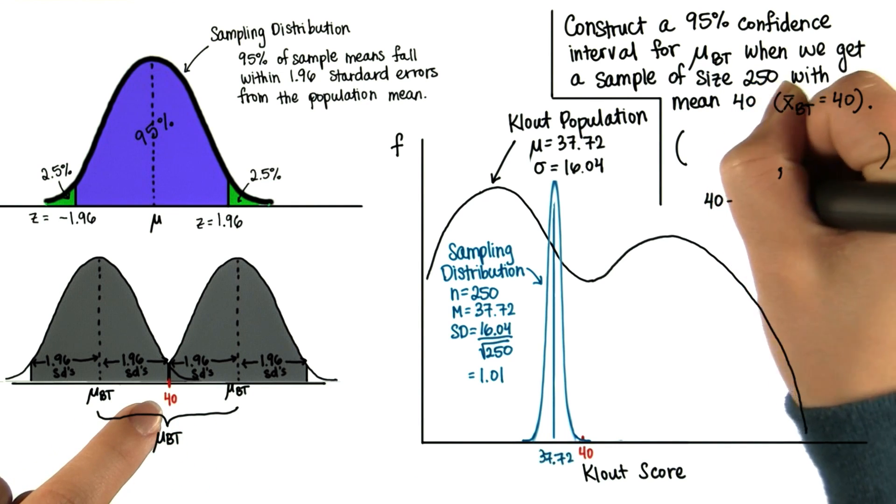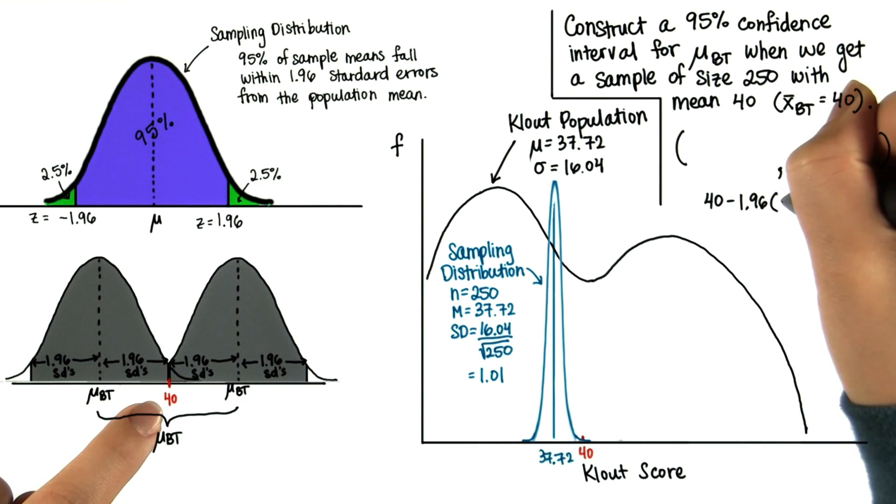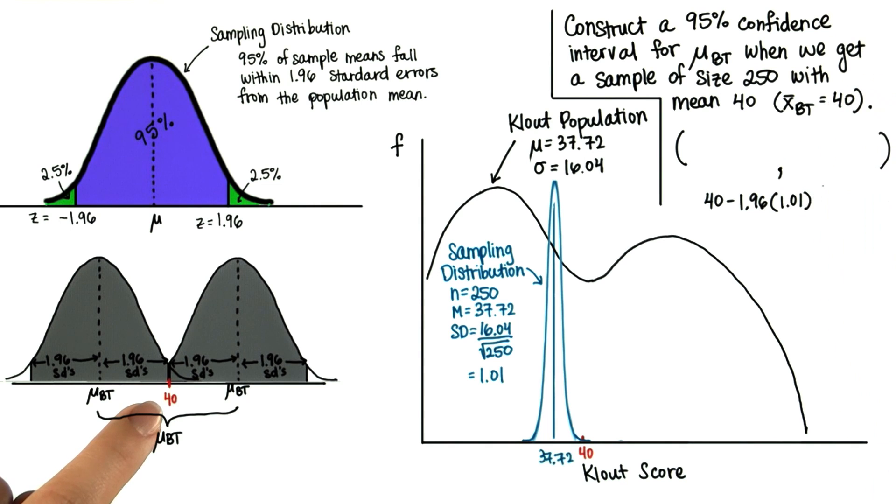So our sample mean is 40, and if we subtract 1.96 standard deviations, we subtract 1.96 times 1.01.